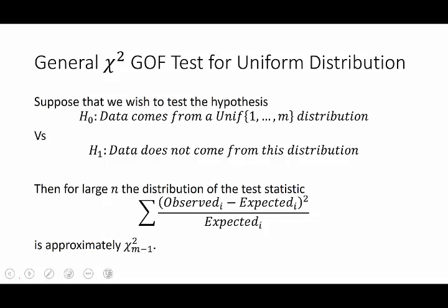Now a more general result than this applies in the situation of birth months or in fact any time when you're testing against a discrete uniform distribution. This is a more general version of the chi-squared goodness of fit test. So suppose we wish to test the hypothesis, the null hypothesis, that the data comes from a uniform one through m distribution versus the alternative that the data does not come from this distribution. Think of the parameter m here as the number of possible outcomes or the number of categories, so for the coin tossing it would be two, for birth months it would be 12.